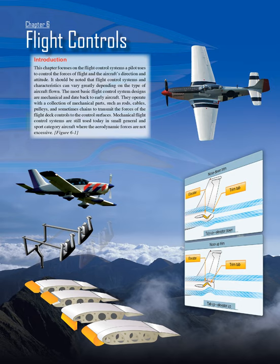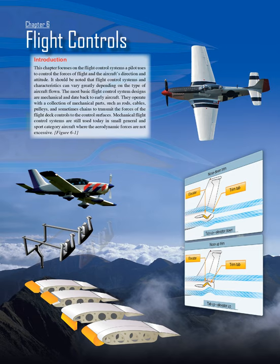Chapter 6: Flight Controls Introduction. This chapter focuses on the flight control systems a pilot uses to control the forces of flight and the aircraft's direction and attitude. Flight control systems and characteristics can vary greatly depending on the type of aircraft flown. The most basic flight control system designs are mechanical and date back to early aircraft, operating with rods, cables, pulleys, and sometimes chains to transmit forces to the control surfaces. Mechanical flight control systems are still used today in small general and sport category aircraft where aerodynamic forces are not excessive.